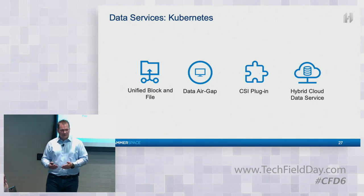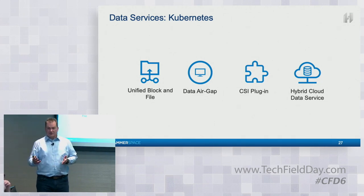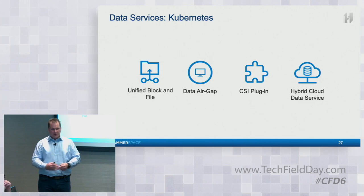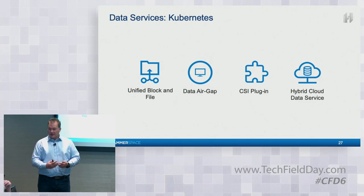Because of our global namespace, we can tie this across distances. You can run Kubernetes in Google, in Amazon, on-prem — all seeing the same data.